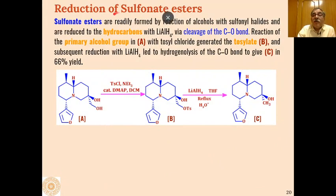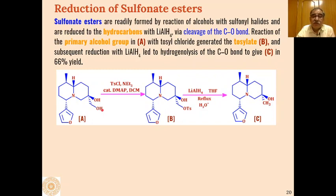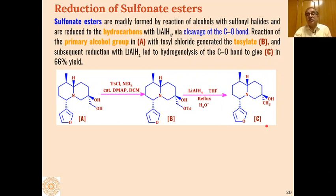Sulfonate esters can also be reduced by LAH. For example, a diol bearing a secondary and a primary hydroxyl group is treated with para-toluenesulfonyl chloride to form the tosylate of the primary alcohol; this tosylate undergoes hydrogenolysis with LAH, converting CH₂–OTs to CH₃, giving the reduced product via cleavage of the C–O bond.